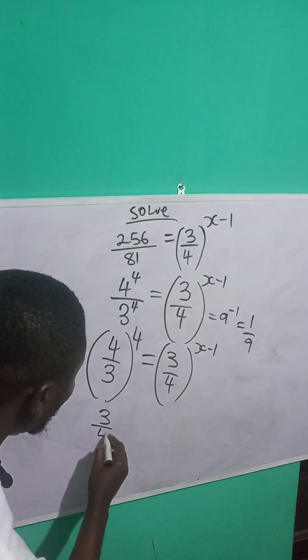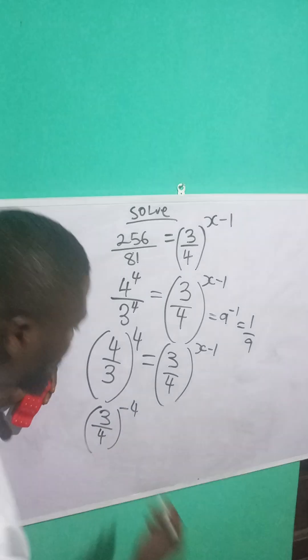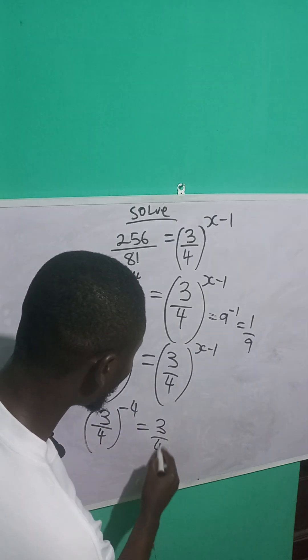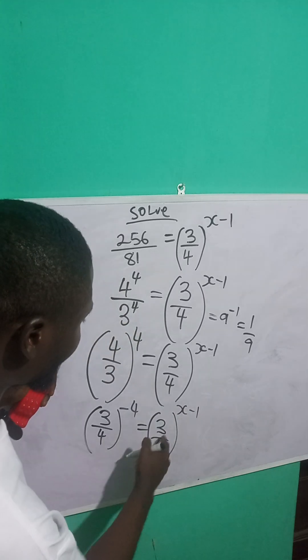So this becomes 3 over 4, all raised to power minus 4. Is equal to what? 3 over 4, all raised to power x minus 1. You can see that they have the same base.